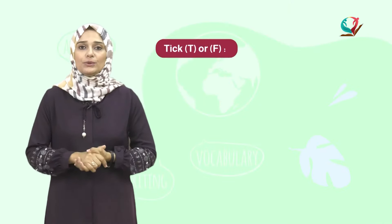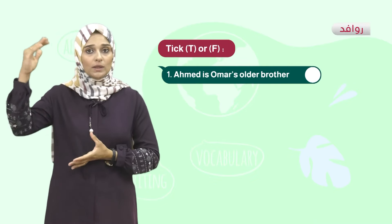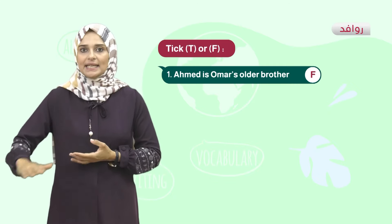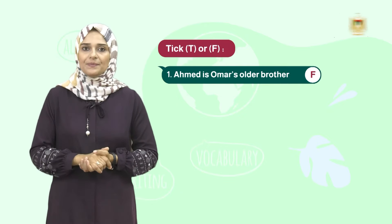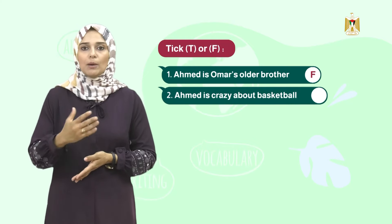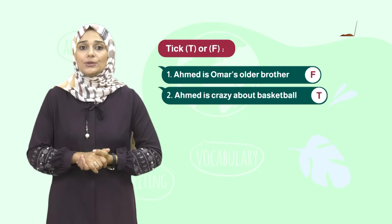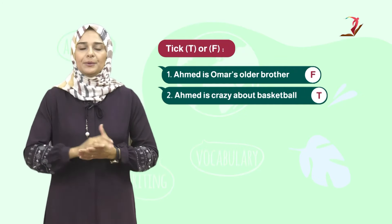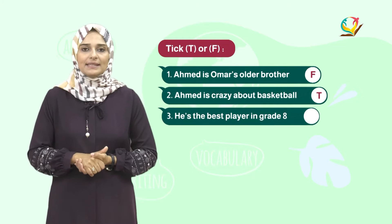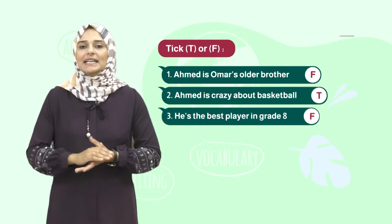True or false? Question 1: Ahmad is Umar's older brother? No, that's false — he is younger. Question 2: Ahmad is crazy about basketball? Yes, that's right — it's true. Number 3: He is the best player in grade 8? No, that's false — he's the best player in grade 6.